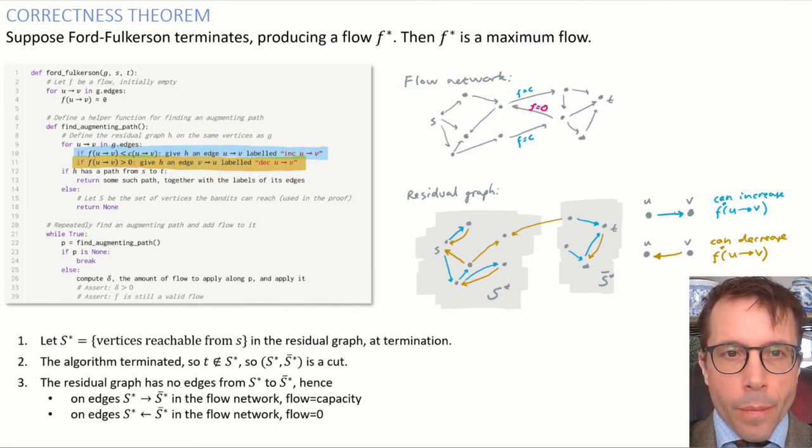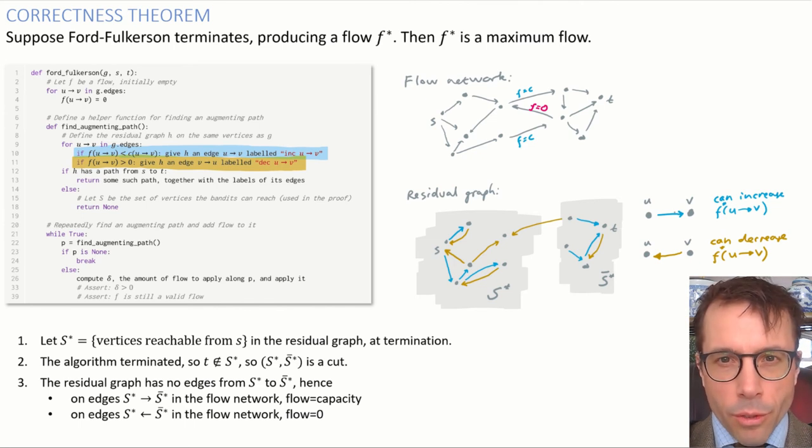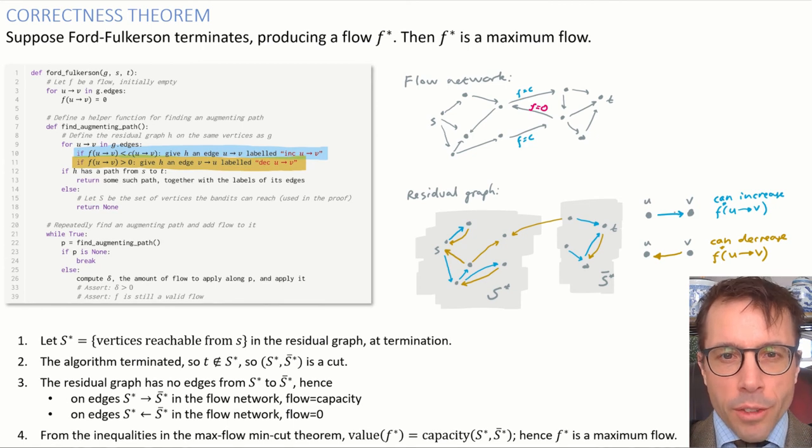Let's repeat. The flow on every edge from the left-hand side to the right-hand side is equal to capacity, and the flow on every edge from the right-hand side to the left is zero. What we said about the max flow min cut theorem tells us that this flow is therefore a maximum flow, QED.